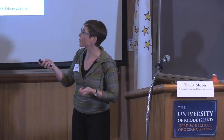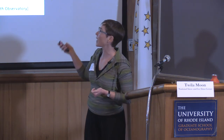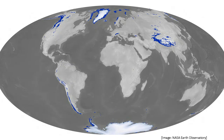We can understand how these all fit together on the globe. In blue are all of our smaller mountain glaciers and ice caps, and then we have the ice sheets in Antarctica and Greenland. But why in the world do we even have these glaciers all over the globe? Why are there glaciers here almost at the equator?